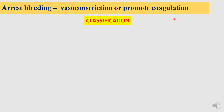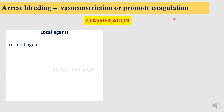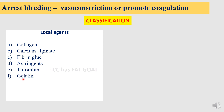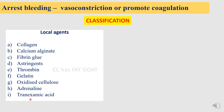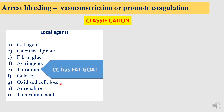Classified as local agents, which consist of collagen, calcium alginate, fibrin glue, astringents, thrombin, gelatin, oxidized cellulose, adrenaline, and tranexamic acid. Finding it difficult to memorize? Go for this mnemonic: Sissy has fat goat. Try it yourself.